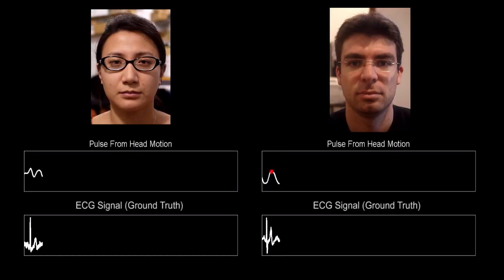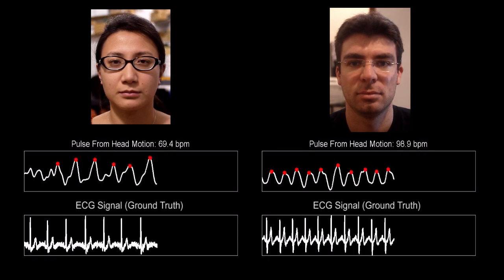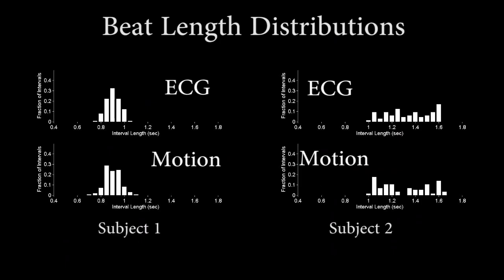We tested our method on different people varying in skin tone and gender and were able to get nearly exact pulse rates compared to an ECG device. In addition, our method produced similar beat length distributions to the ECG — an exciting result that shows that we can capture more subtle information about the heart than just an average rate.